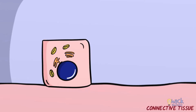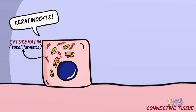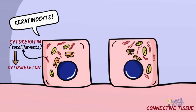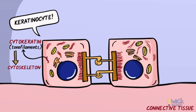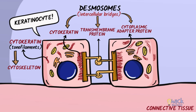The epithelial cells are called keratinocytes due to the presence of cytokeratins, which are bundled into tonofilaments. Cytokeratins along with microtubules and microfilaments form the cytoskeleton of these cells. Keratinocytes are firmly attached to each other with the help of intercellular bridges called desmosomes, which are a group of cellular junctions composed of transmembrane proteins and cytoplasmic adaptor proteins attaching with these cytoskeletal filaments or tonofilaments.